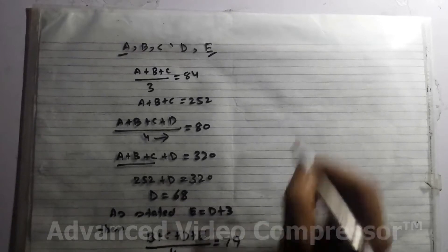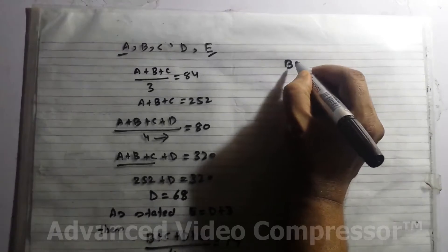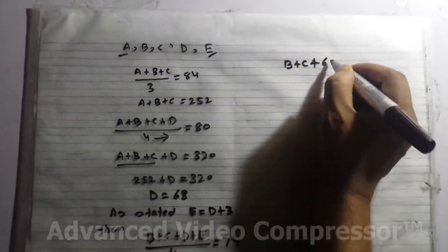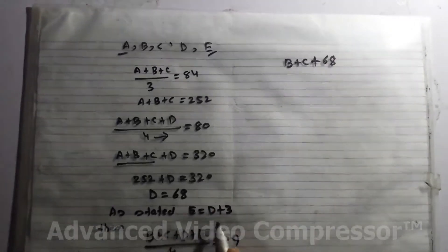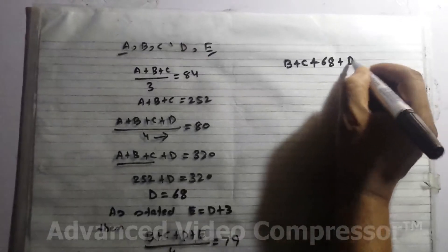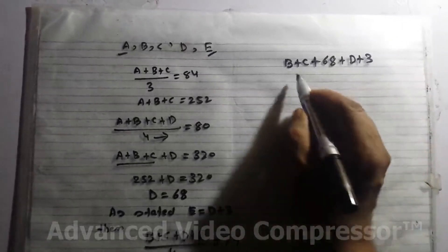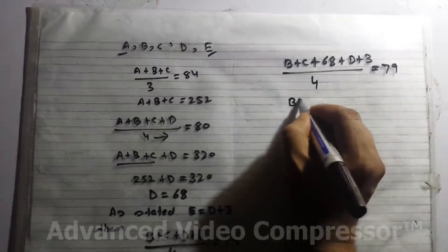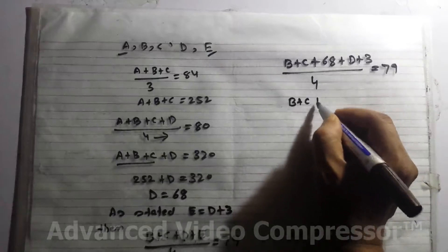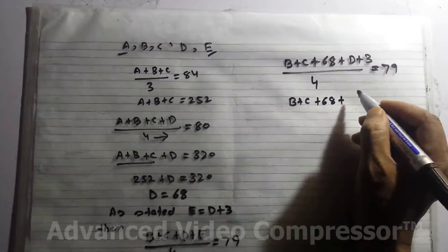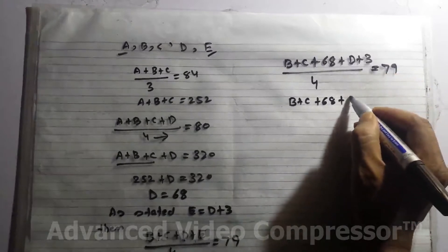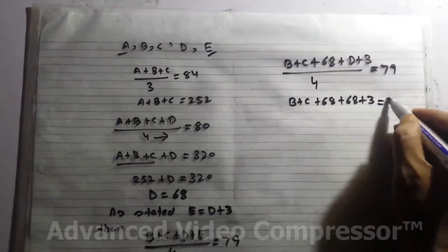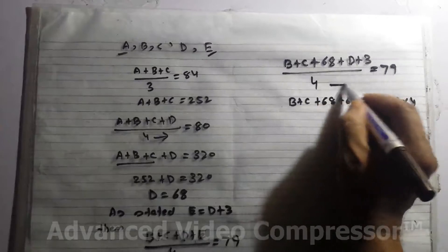I think we should move 4 to the other side. B + C + D, where D = 68, and E = D + 3, so over 4 equals 79. B + C + 68 + 68 + 3 = 79 × 4. We shifted this 4 to the other side.